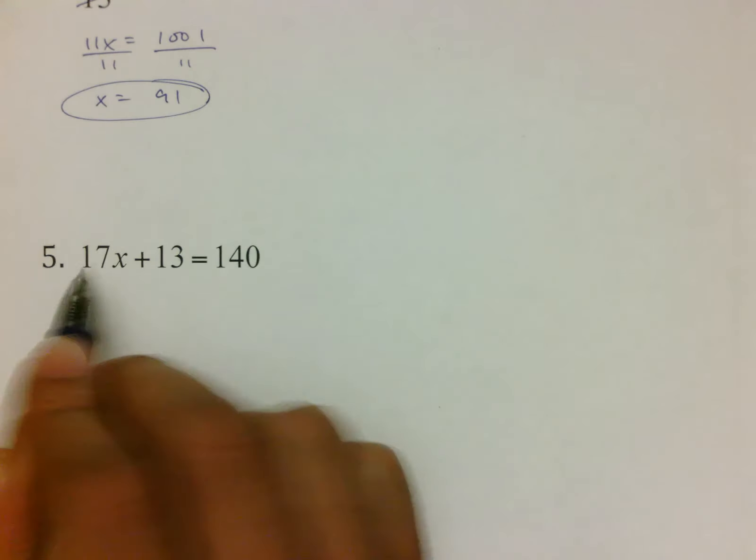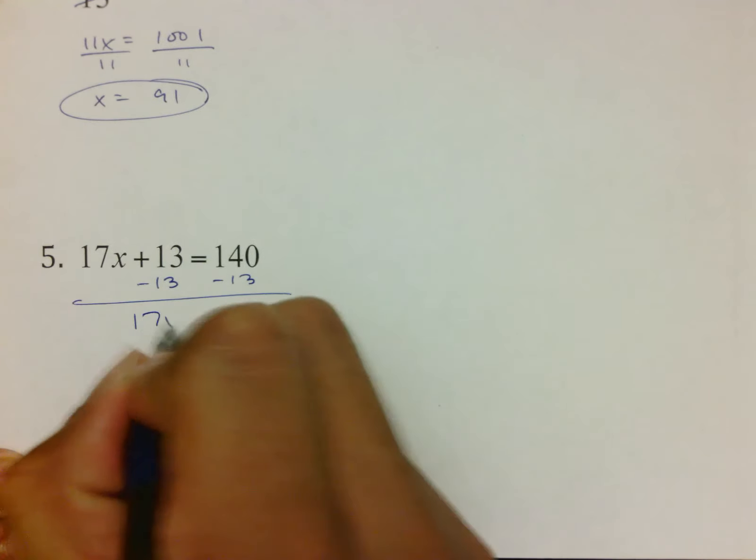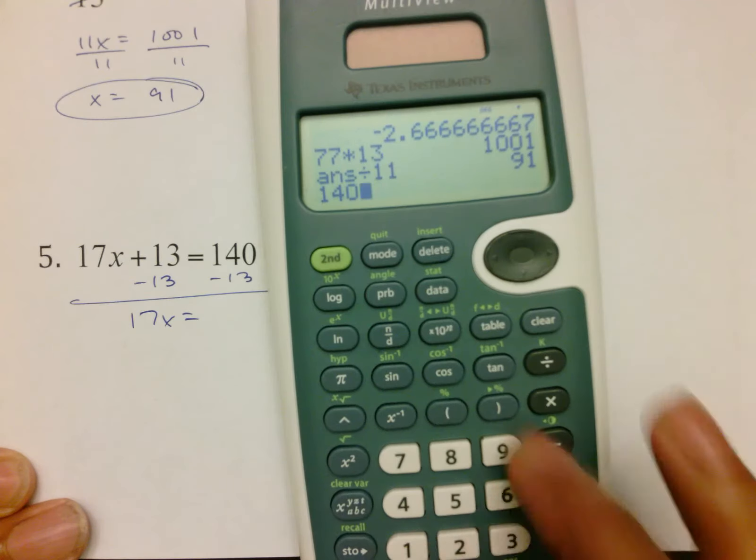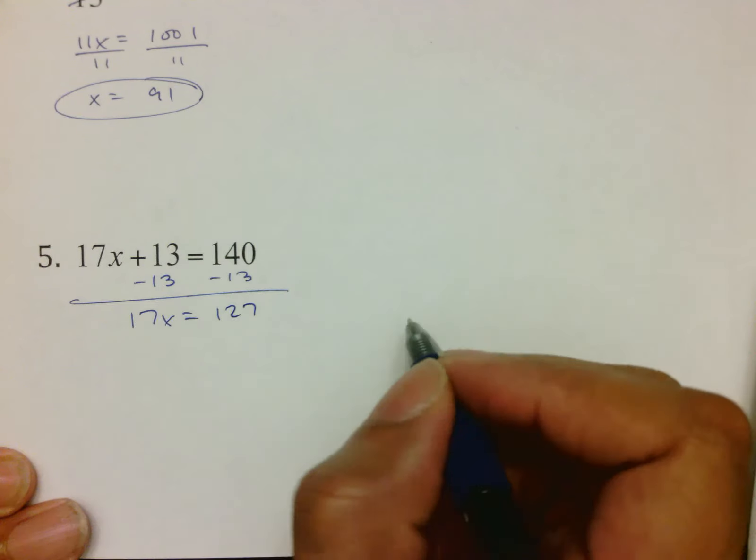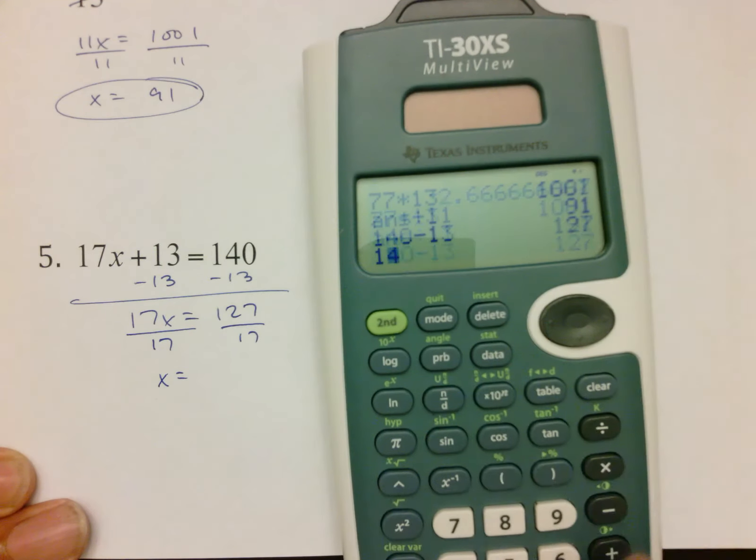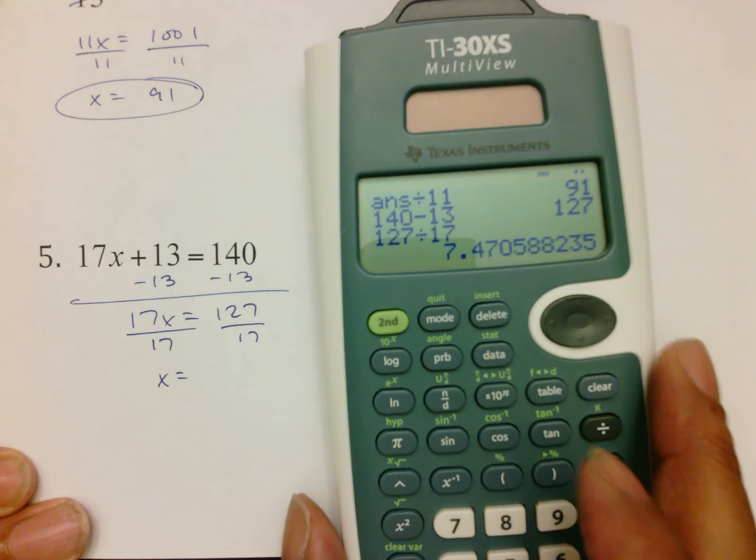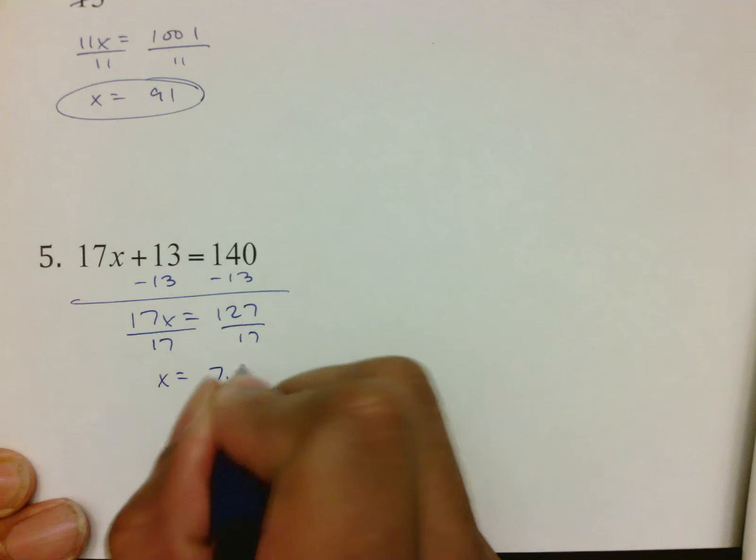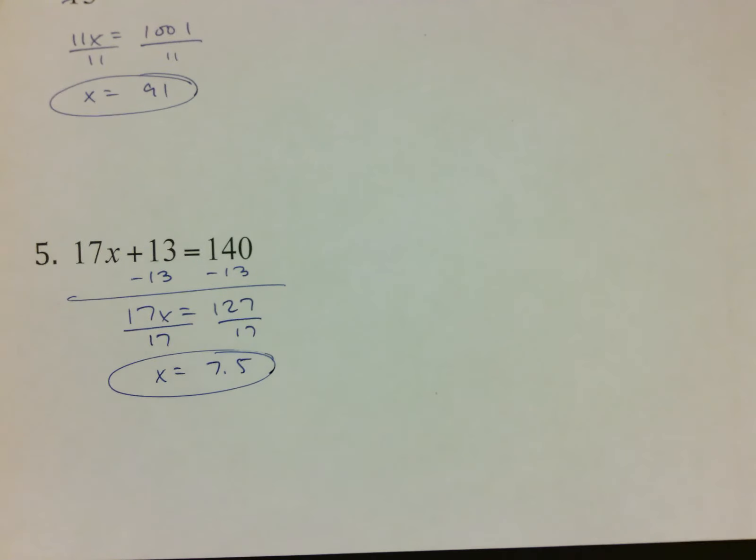Number 5, we've got 17x plus 13 equals 140. First thing we want to do is subtract our 13 from that, getting 17x equals 127. From there, move the 17 by dividing. I think this is getting very repetitive and probably boring for some of you. 7.5 is what we'll put on that. I don't think you'll have a decimal on that question on the test, but I messed up on occasion. Sorry about that.